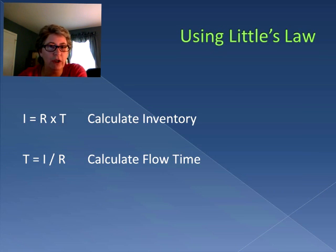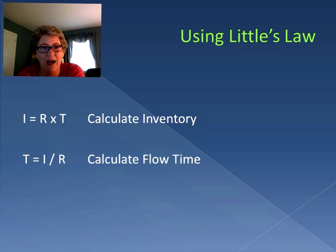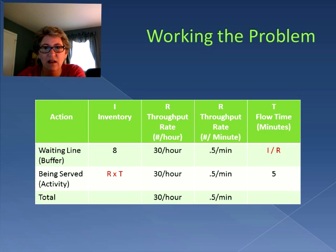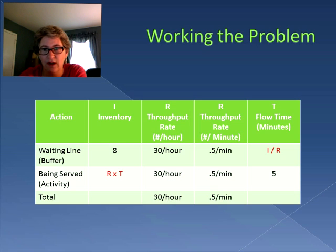Now we're going to use Little's Law in two different versions of the same equation. The first form is I = R × T: inventory equals throughput rate times flow time, which we use to calculate inventory when we have throughput rate and flow time. Another form is T = I ÷ R, which calculates flow time when we already have inventory and throughput rate. Looking at our table, for the waiting line buffer we have I and R, so we'll calculate T using I ÷ R. For the activity of being served, we have throughput rate and flow time, so we'll use R × T to calculate inventory.